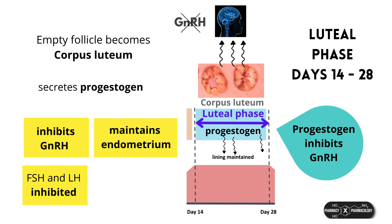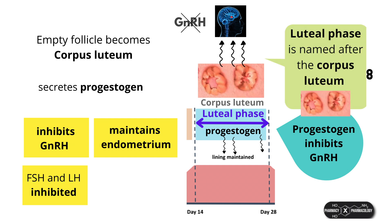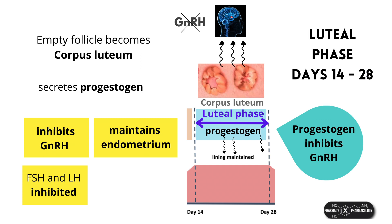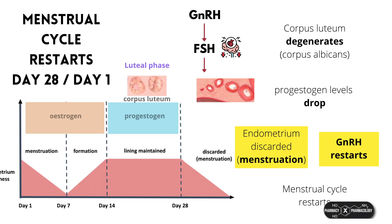The empty follicle then turns into a corpus luteum, which secretes progesterone for 14 days until it dies off. Progesterone maintains the endometrium and also suppresses the secretion of GNRH, so during the luteal phase, no FSH or LH will be produced. The corpus luteum also continues to secrete estrogen, although in smaller quantities than before. If by the 28th day of the menstrual cycle no implantation of an embryo has occurred, the corpus luteum will die and stop secreting progesterone. The drop in progesterone simultaneously triggers the discarding of the endometrium and reactivation of GNRH pulses, thus restarting the menstrual cycle.